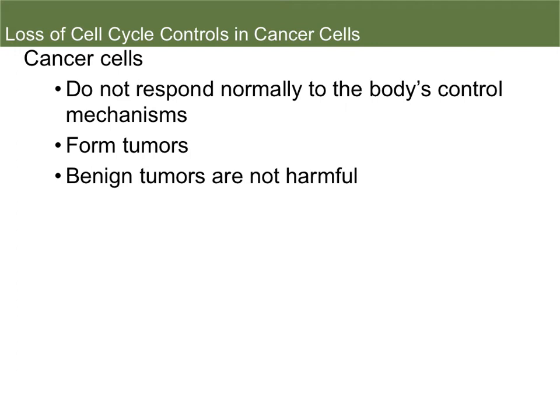Cancer cells do not respond normally to the body's control mechanisms. They continue to divide regardless of what is controlling the cell cycle or telling it to stop. When this happens, it forms tumors. Tumors can be benign or malignant — if they're benign, that means they're not harmful; if they're malignant, that is where they're invasive. Tumors are just clumps of cells that have grown abnormally.